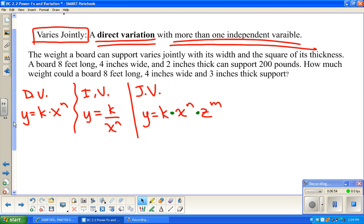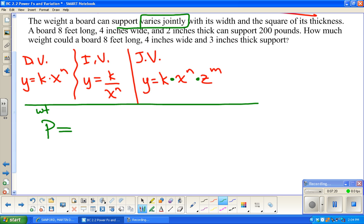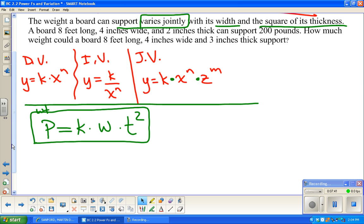The weight a board can support in pounds varies jointly with its width and the square of its thickness. Yesterday, or last time, on the last video, we actually saw this as two separate relationships. Well, this lets me put it together as a single relationship. So, P = k times w times t squared.